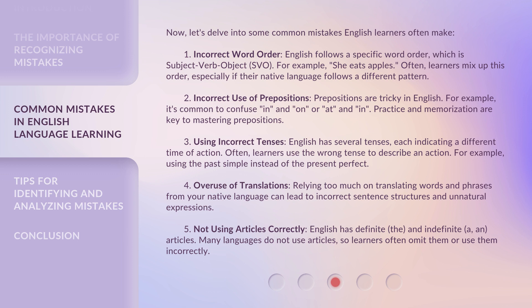3. Using Incorrect Tenses. English has several tenses, each indicating a different time of action. Often, learners use the wrong tense to describe an action — for example, using the past simple instead of the present perfect.